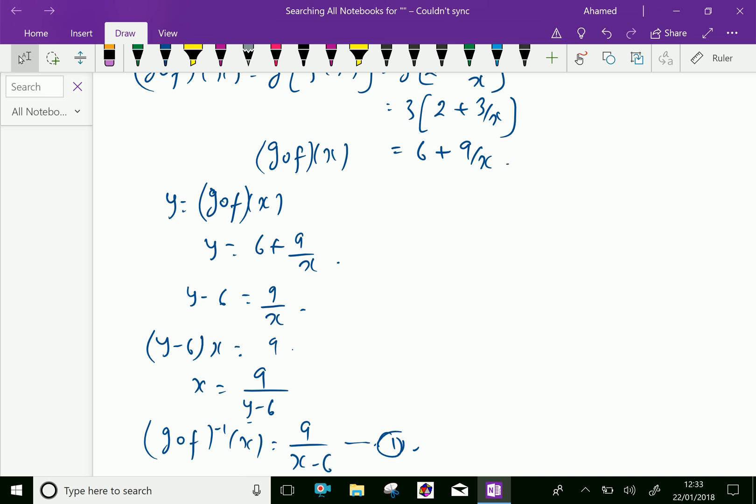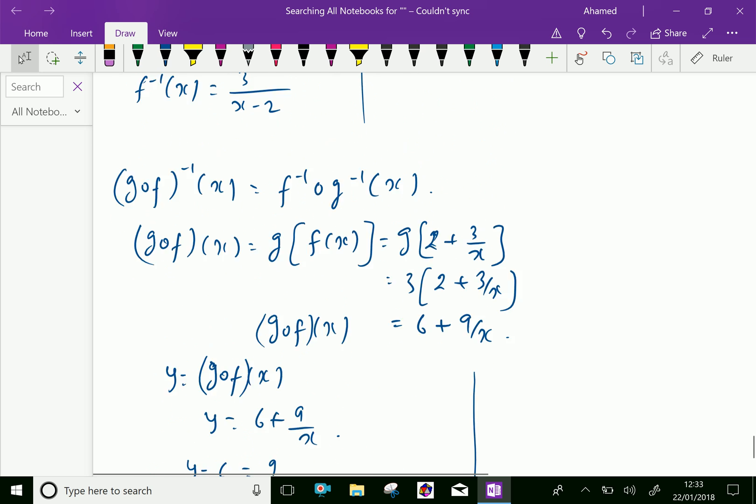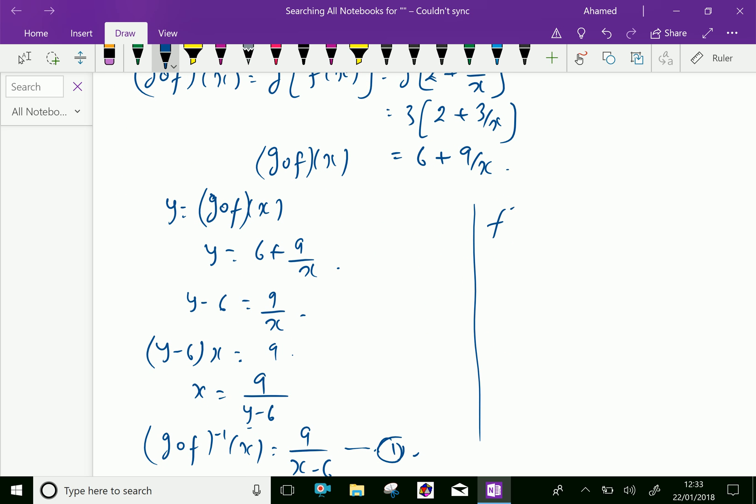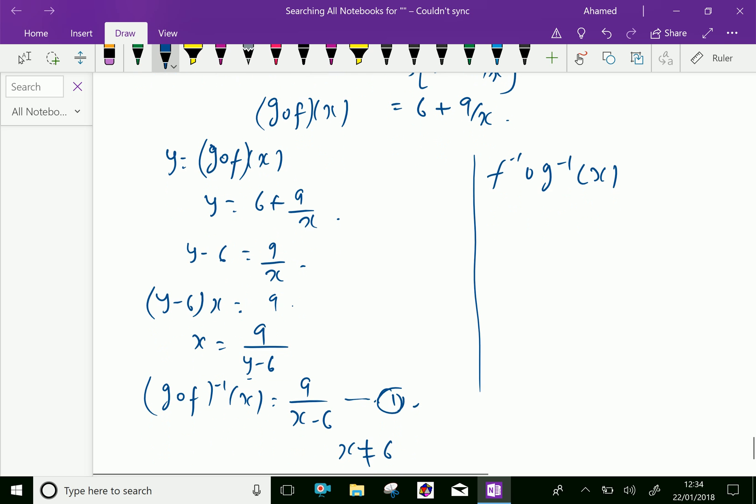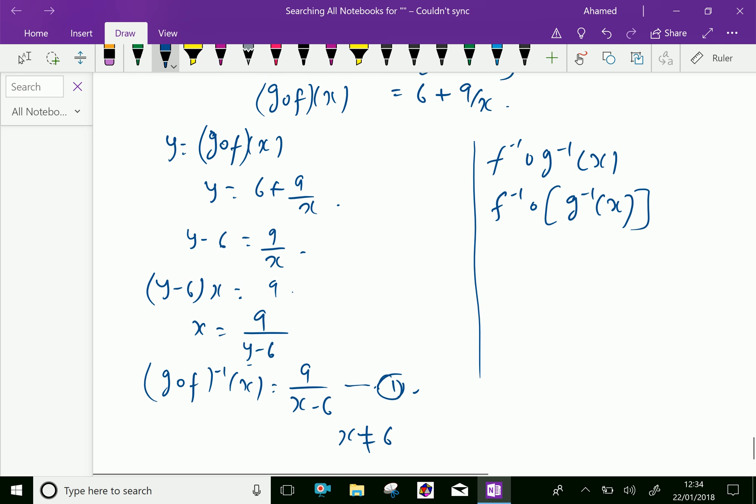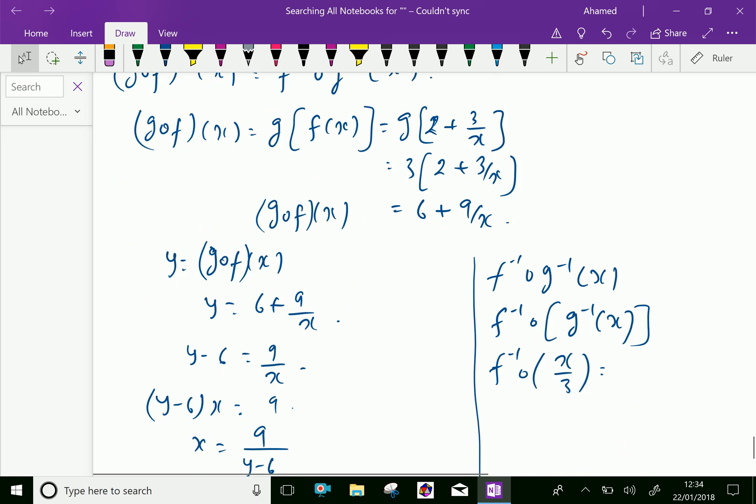Now let us find this side as f inverse of g inverse x. For that, x is equal to g inverse x in f inverse x. Already g inverse x is x over 3, which now we will apply in f inverse x. We have f inverse x is 3 over x minus 2.